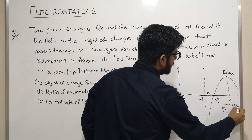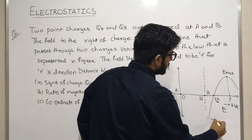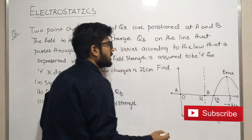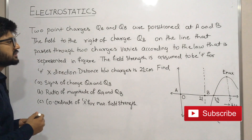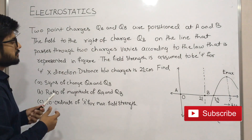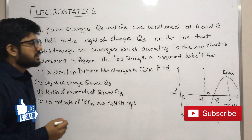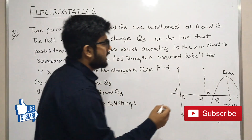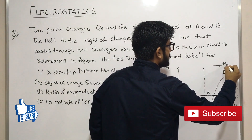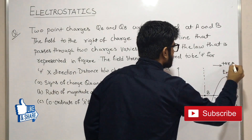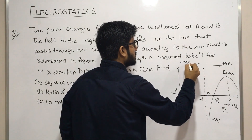We can see that after this point our electric field is positive and before this point our electric field is negative. The field strength is assumed to be positive for the positive x direction — when the electric field is in this direction it will be positive, and in the opposite direction it will be negative.